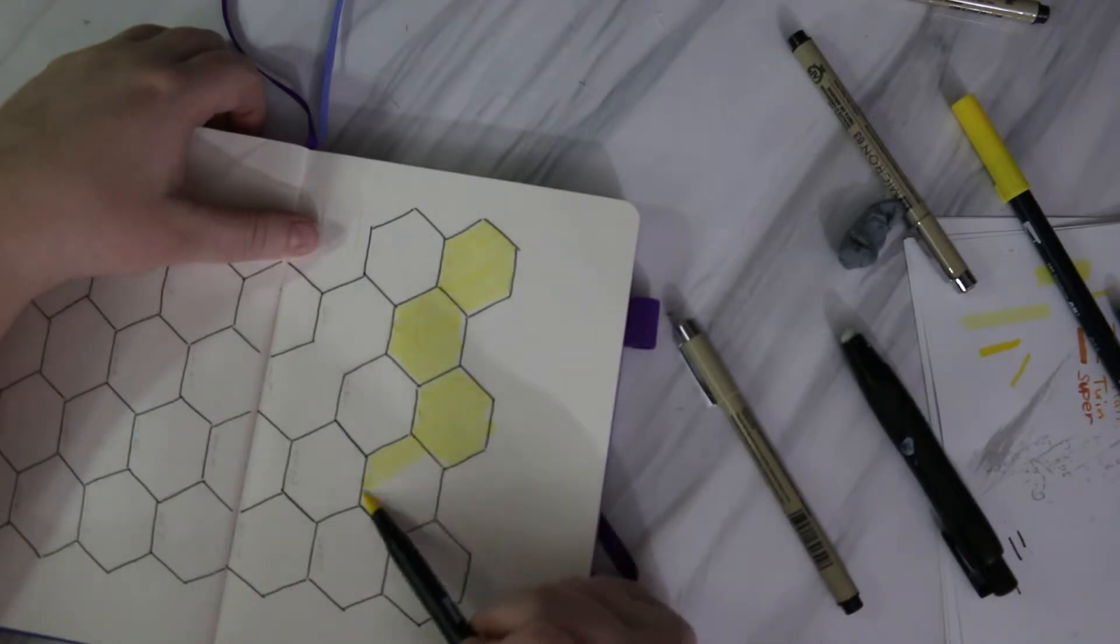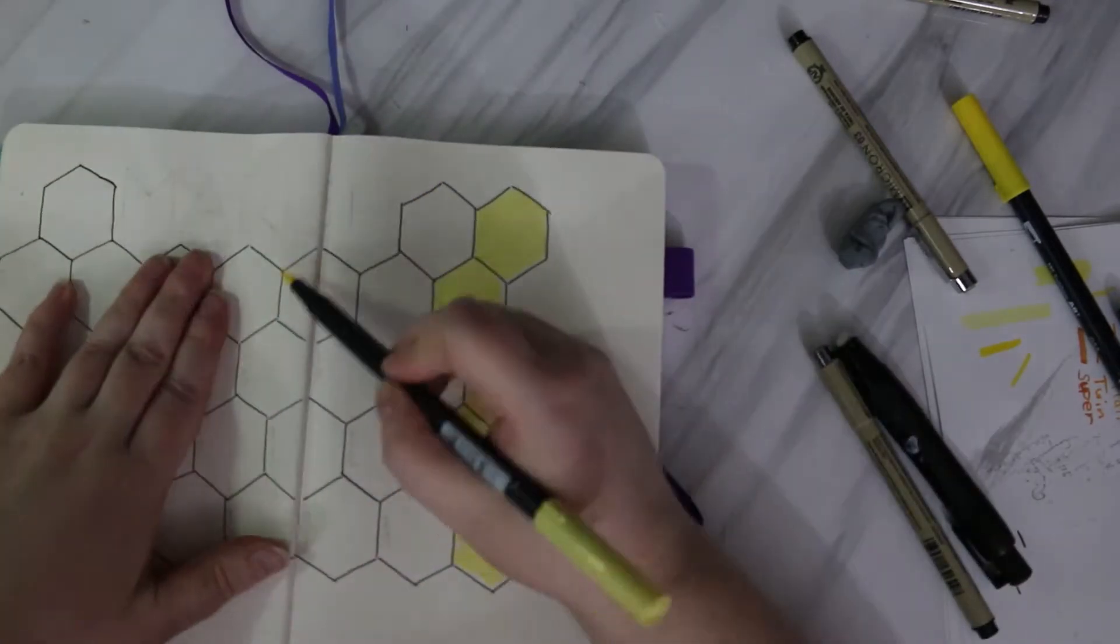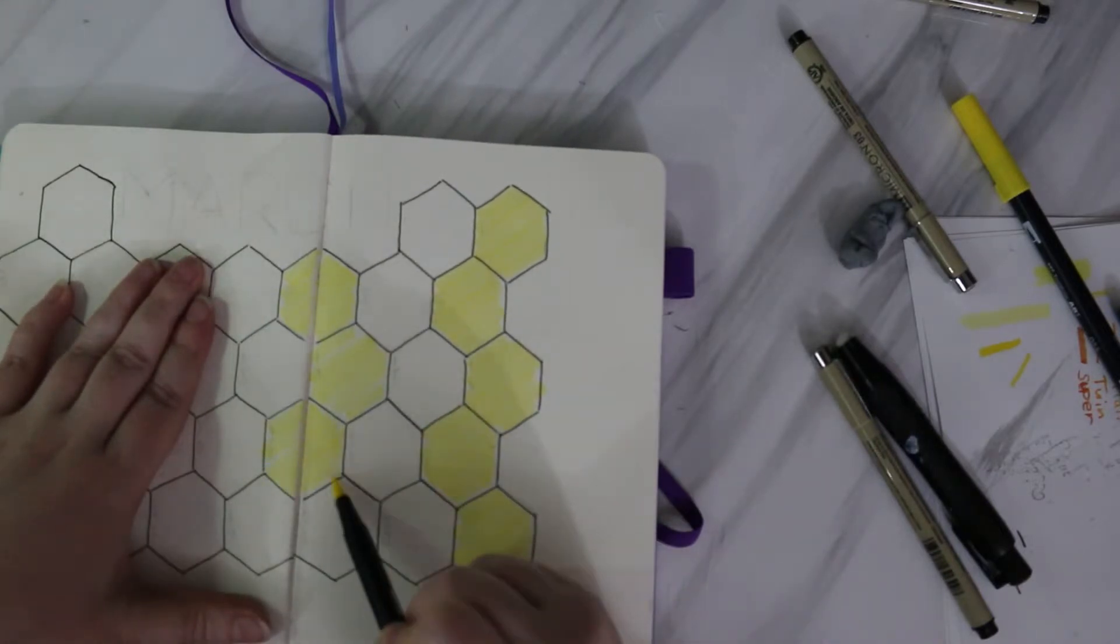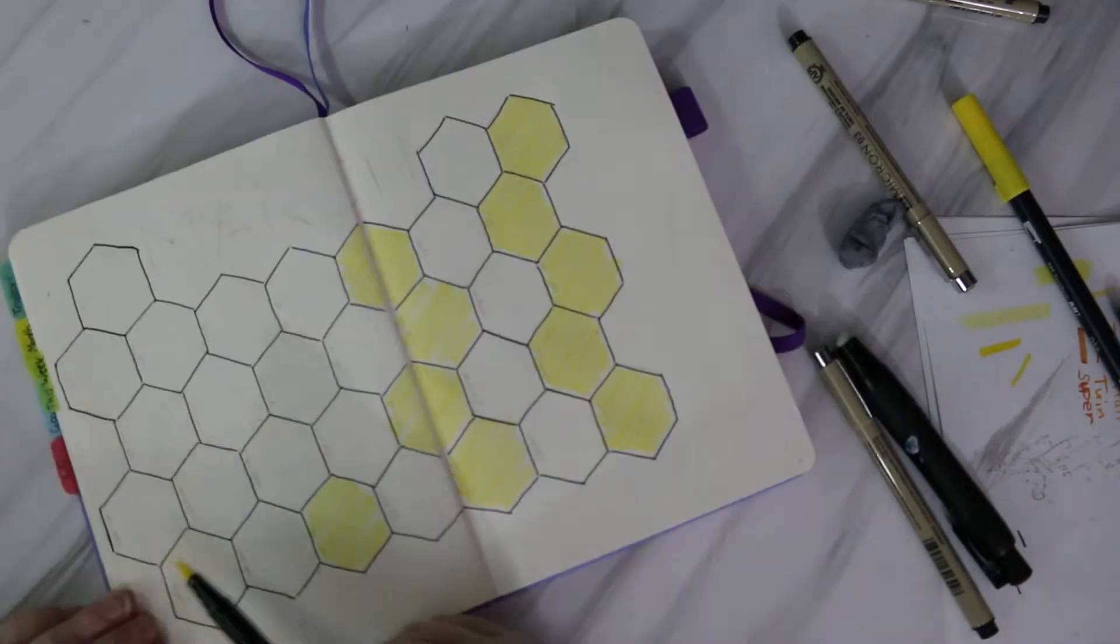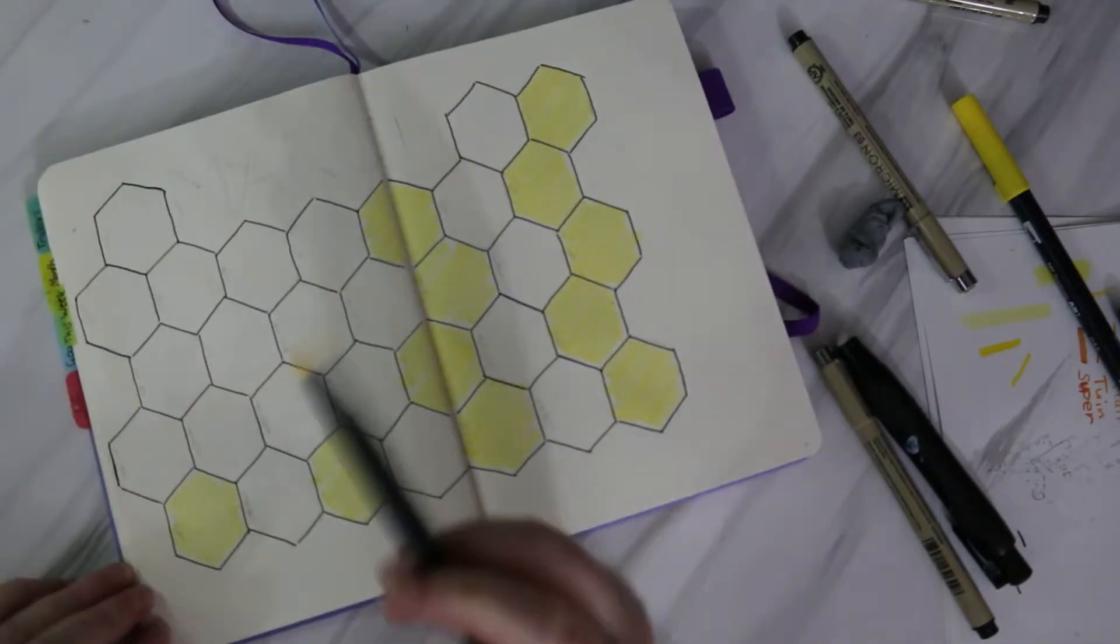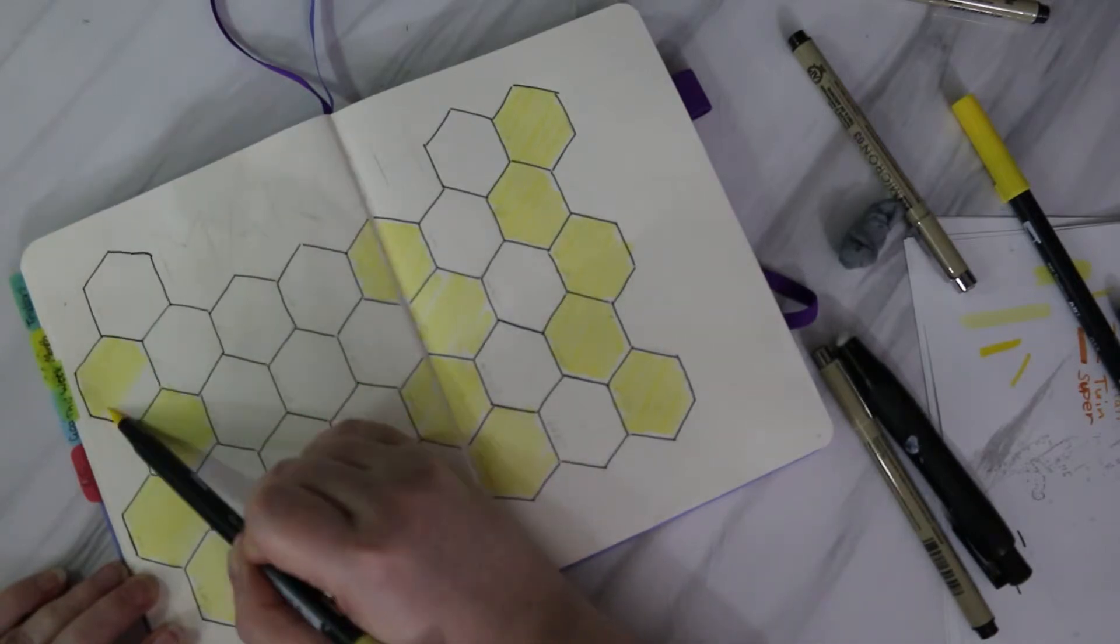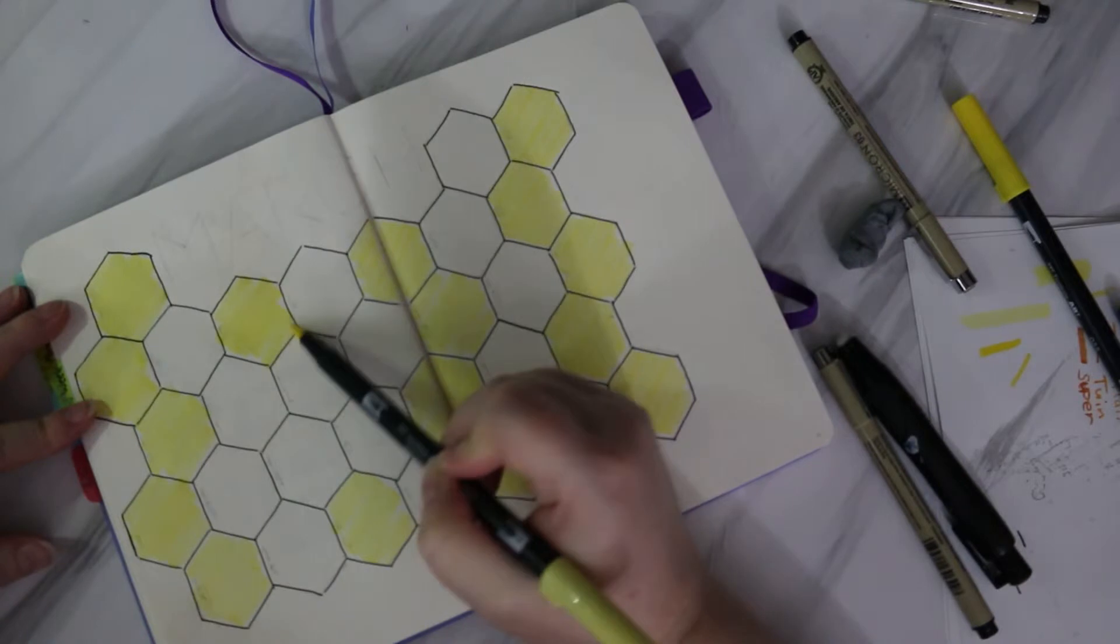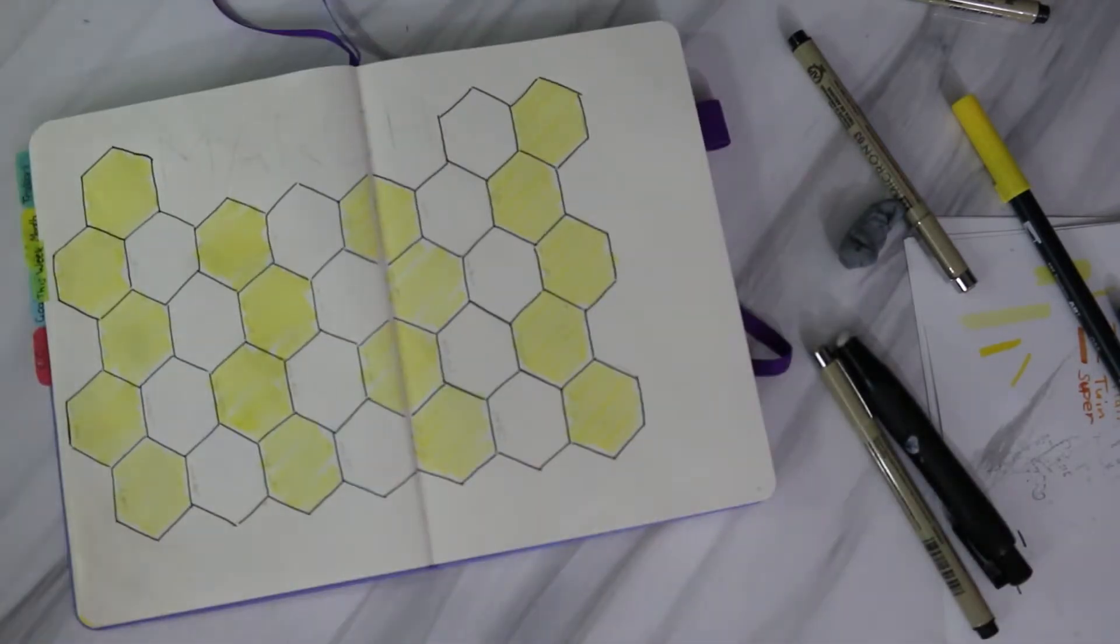Here I'm basically marking the days of the week by coloring in every second column. That way I can tell just by glancing at it whether it's a Sunday, Monday, Tuesday, Wednesday, Thursday, or Friday.